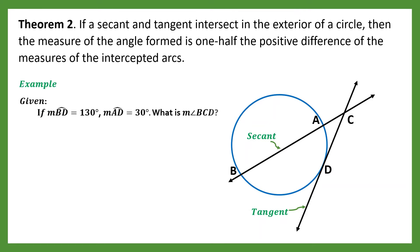Let's have an example. Given: if the measurement of arc BD is 130 degrees and the measurement of arc AD is 30 degrees, what is the measurement of angle BCD? Based on the theorem, the measurement of angle BCD is equal to one half of the measurement of arc BD minus the measurement of arc AD.